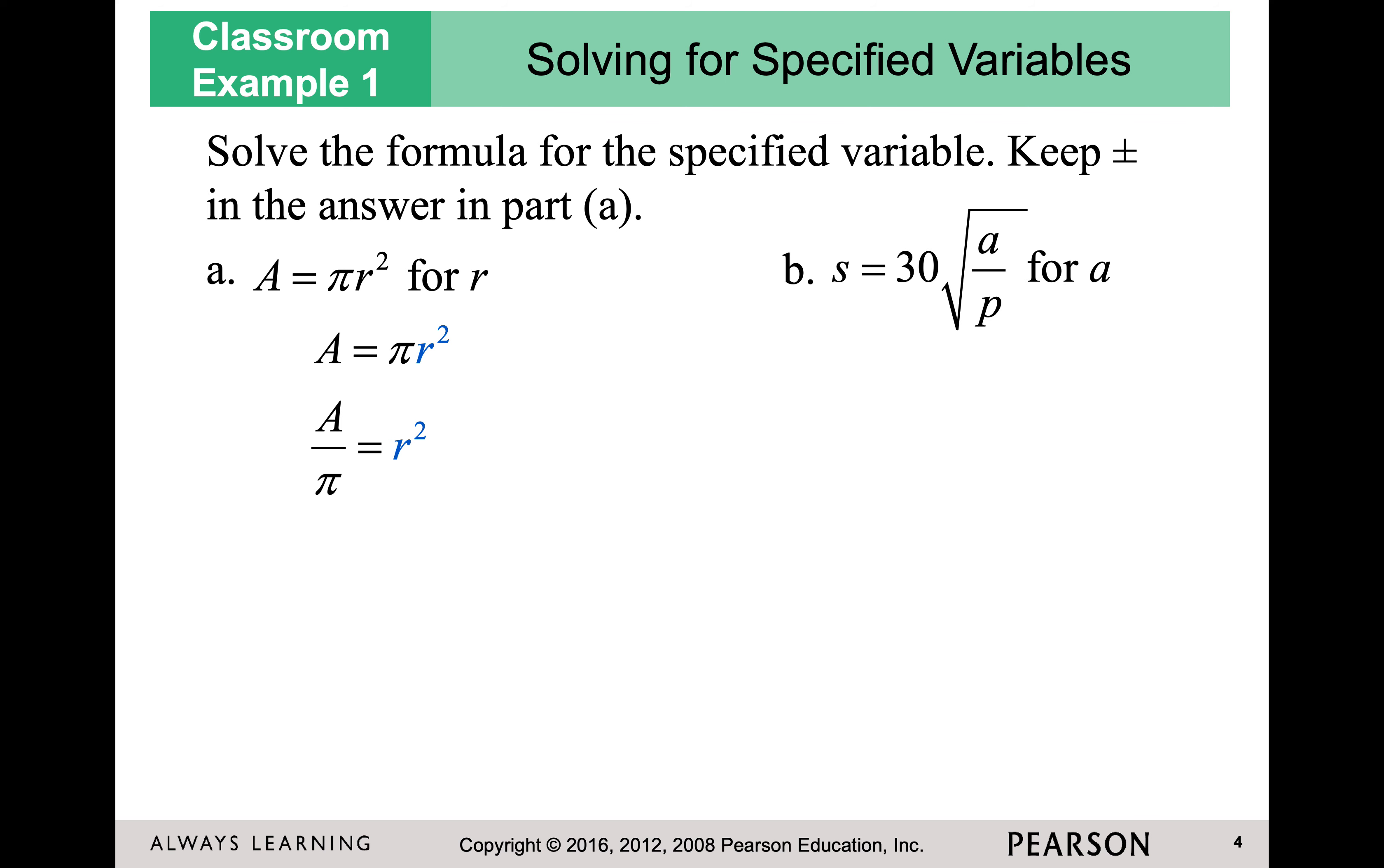And then that gives me A divided by pi, and it's okay not to have a number there, equals r squared. To get r alone, I want to take the square root of both sides. When I take the square root of both sides, it's going to give me the square root of A over the square root of pi, and it's positive or negative because it's the square root. But I have to rationalize that denominator using what we already know. I'm going to multiply by the square root of pi over the square root of pi, which is then going to give me the square root of A pi over pi.